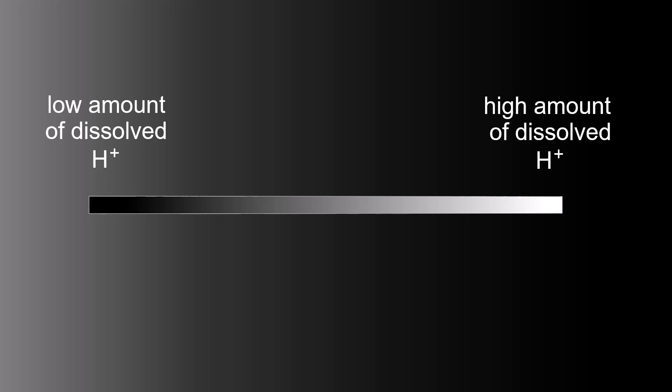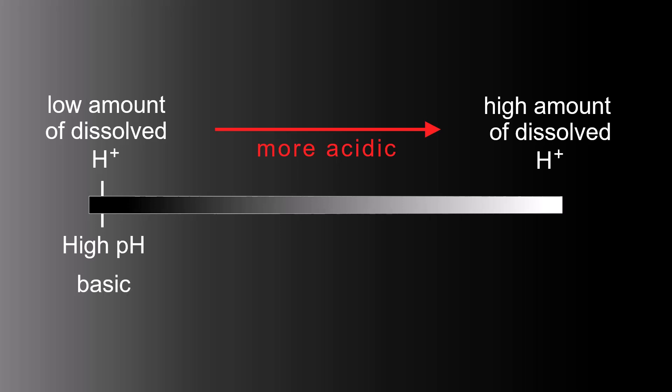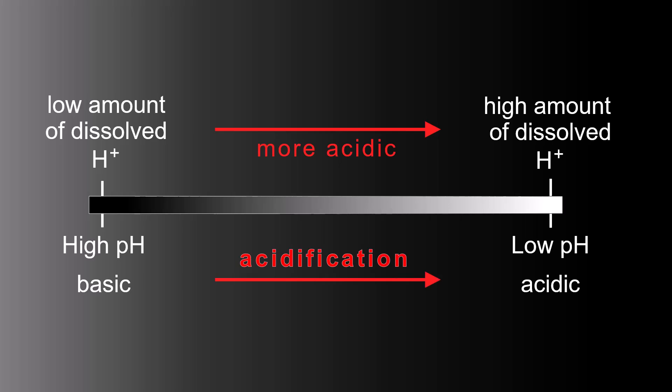First, let's take a look at what we mean by acid. We can look at this bar as a continuum, with the left showing low amounts of dissolved hydrogen ions and the right showing high amounts. Going from left to right things become more acidic. A low amount of dissolved hydrogen ions is a high pH — a basic solution. A high amount of dissolved hydrogen ions is a low pH, an acidic solution. pH is the inverse of the amount of hydrogen ions dissolved, which is why pH is high for basic and low for acidic. Going from left to right is considered acidification.